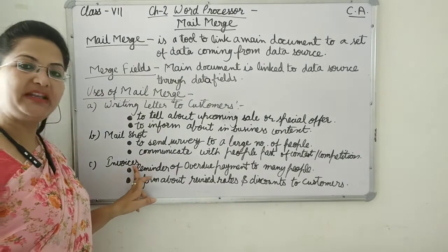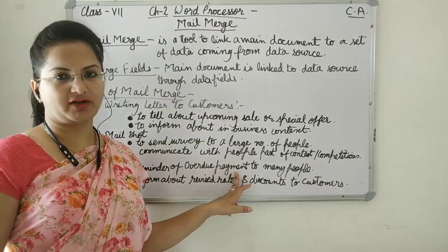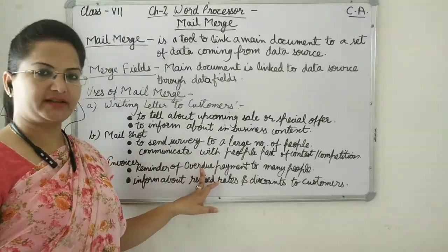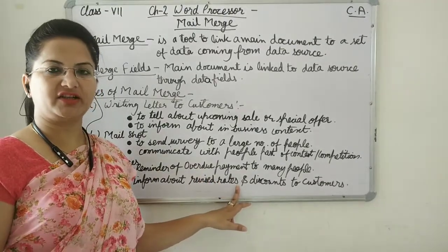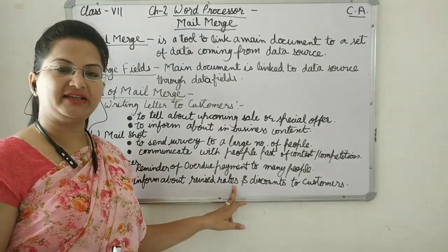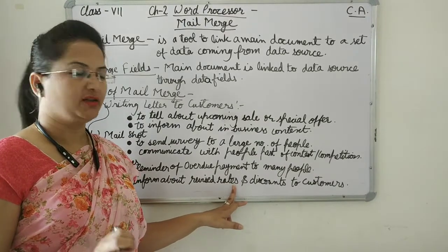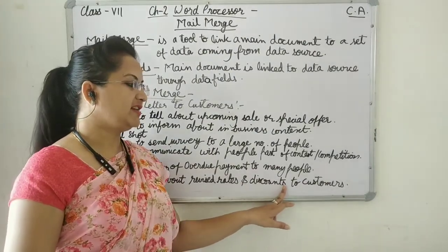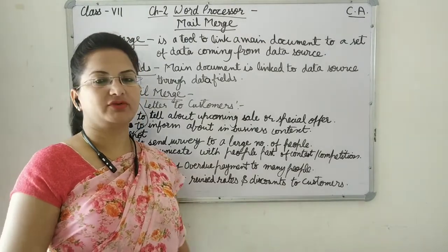Next is invoices — invoices means bills. If there is any overdue payment for a customer, a bill reminder can be sent to many people at the same time. Then, to inform about revised rates — if there is any change in the price of a product, it can be communicated using Mail Merge, and if any discount is provided on any product, it can be informed to the customer.